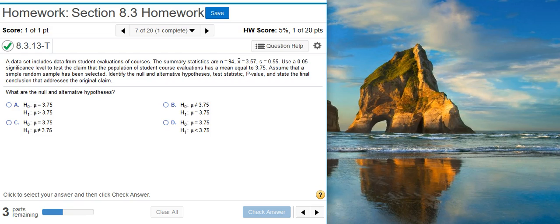Identify the null and alternative hypotheses, test statistic, p-value, and state the final conclusion that addresses the original claim. Okay, so the first part of the problem asks us to identify the null and alternative hypotheses. To do this, we first need to think about the claim that's being made. If we go back to the problem statement, we can see that the claim is that the population of student course evaluations has a mean equal to 3.75.